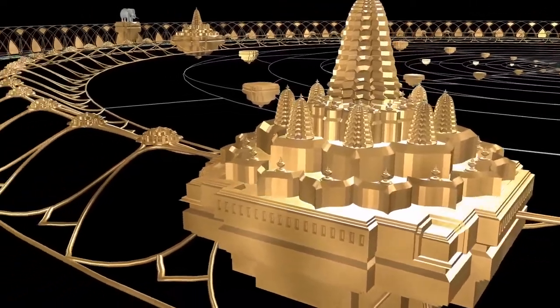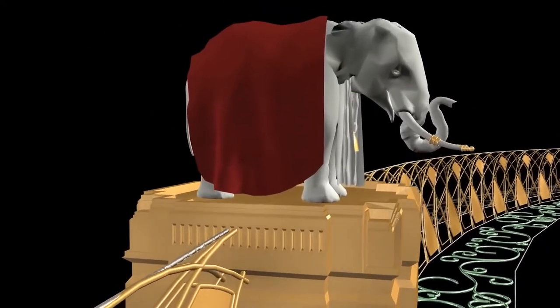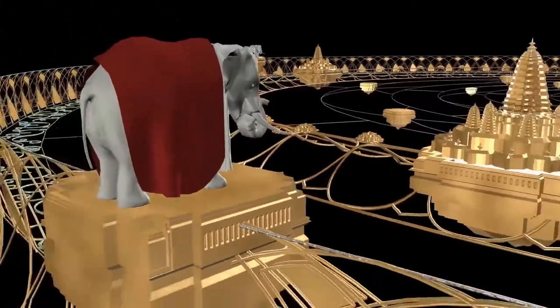Out further is Loka Loka mountain. These large elephants stand atop Loka Loka mountain to balance Bhumandala. Outside of Loka Loka mountain is Aloka Varsha, which is dark.